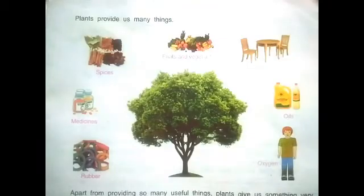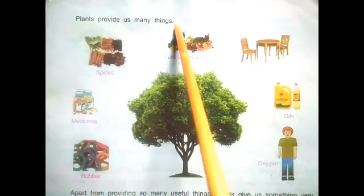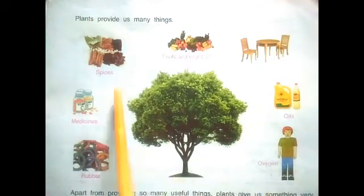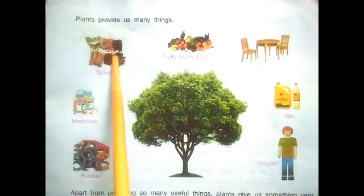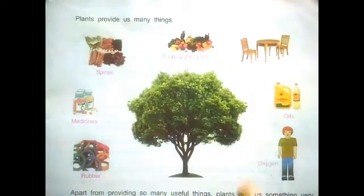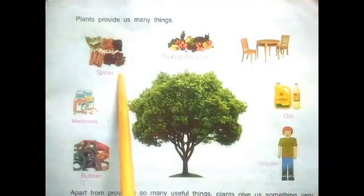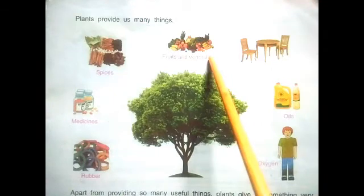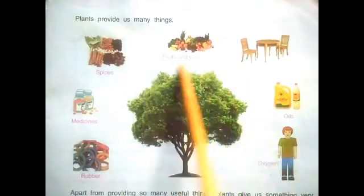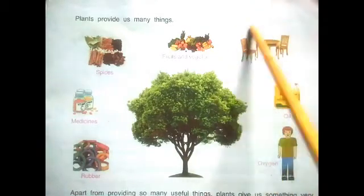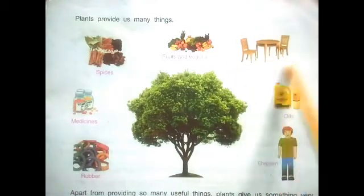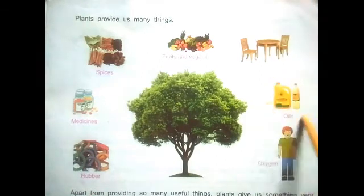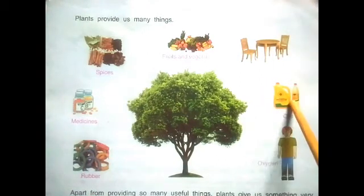Plants provide us many things. The first one is spices — all the masala we use comes from plants. Then fruits and vegetables, which everyone likes. Also wooden furniture that we use in our homes comes from plants. Oils also come from plants — oil seeds give us the oils we use for cooking.